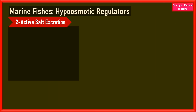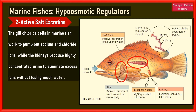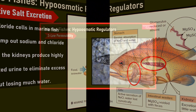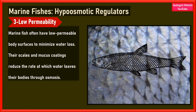The second adaptation in marine fish is active salt excretion. Marine fish possess specialized cells in their gills and kidneys that actively excrete excess salts. The gill chloride cells pump out sodium and chloride ions, while the kidneys produce highly concentrated urine to eliminate excess ions without losing much water. The third strategy is low permeability — marine fish often have a low-permeable body surface, with scales and mucus reducing the rate at which water leaves their bodies through osmosis.